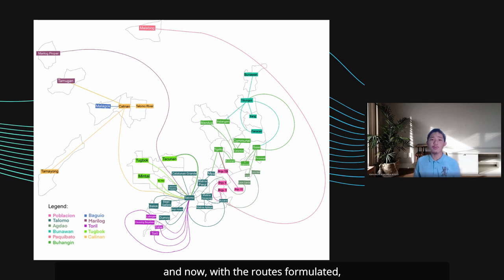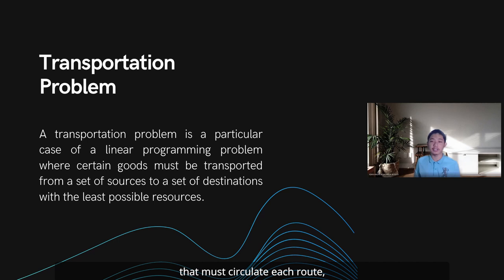the only missing element left to complete the routing paradigm was to determine the minimum number of jeepneys that must pass through each route to maintain the routing paradigm's efficiency. In deciding the number of vehicles that must circulate each route, a transportation model was used.